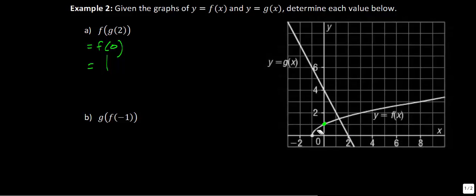Next, part b asks for g of f of negative 1. We look at what happens when we input negative 1 into f — it also equals 0, so we have g of 0. Putting 0 into the function of g gives a matching output value of 4. So that one equals 4.